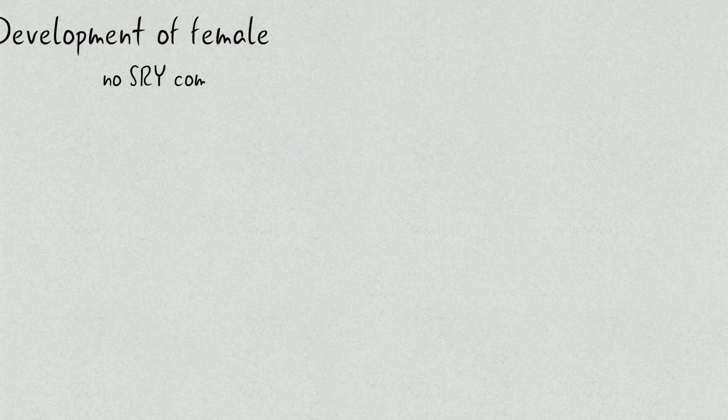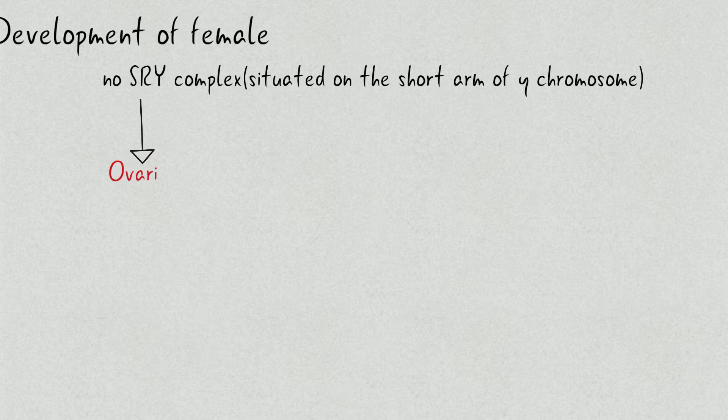SRY is the gene present on the short end of Y chromosome. If it is absent, it leads to the stimulation of formation of ovaries.